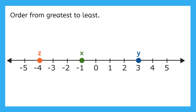So here I have a number line with three points: x, y, and z. And we need to order these points from greatest to least. Well, we just have this one number to the right of zero — y — which is the only positive number, and therefore the biggest. So we can put y first. Now, let's look at these numbers to the left of zero, the negative numbers. Which is the closest to zero? That's right, the x. So x is the next biggest number, and that leaves z as our smallest number.